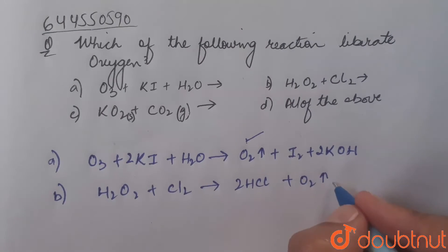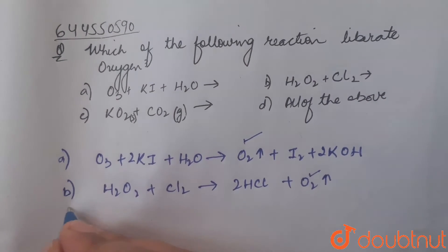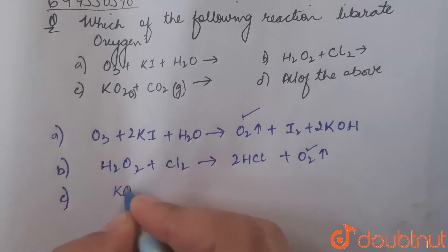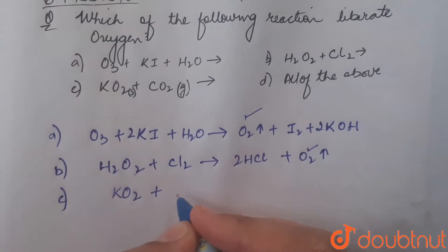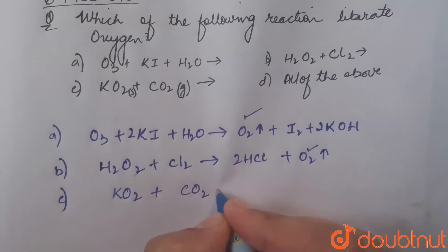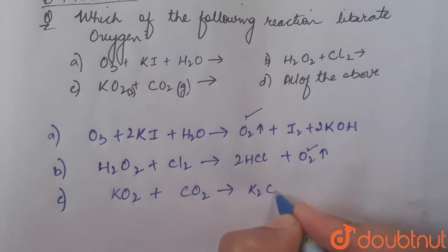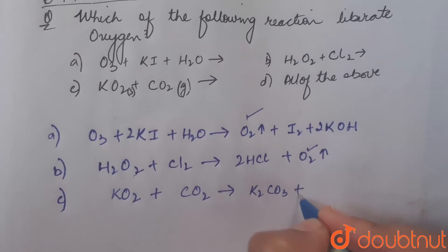Next reaction is potassium superoxide KO2 reacting with carbon dioxide gas CO2. When they react, they form potassium carbonate K2CO3 along with the evolution of oxygen gas. So in this section also, oxygen gas is evolving.